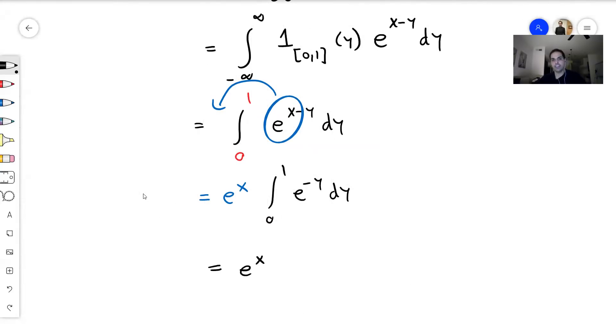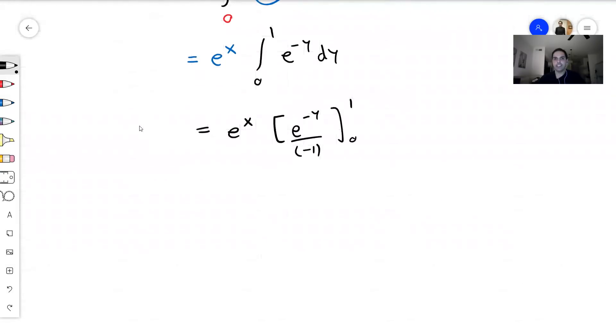And you get e^x, then you calculate the antiderivative, which is e to the minus y over minus 1 from 0 to 1. And you end up getting e^x times minus e to the minus 1, so minus 1 over e plus 1.